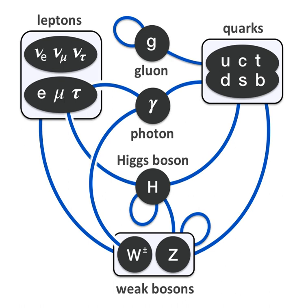By virtue of carrying electric charge, the electron, muon, and tau all interact electromagnetically. Each member of a generation has greater mass than the corresponding particles of lower generations. The first-generation charged particles do not decay; hence all ordinary matter is made of such particles — all atoms consist of electrons orbiting atomic nuclei, ultimately constituted of up and down quarks. Second- and third-generation charged particles decay with very short half-lives and are observed only in very high-energy environments. Neutrinos of all generations do not decay and pervade the universe, but rarely interact with baryonic matter.